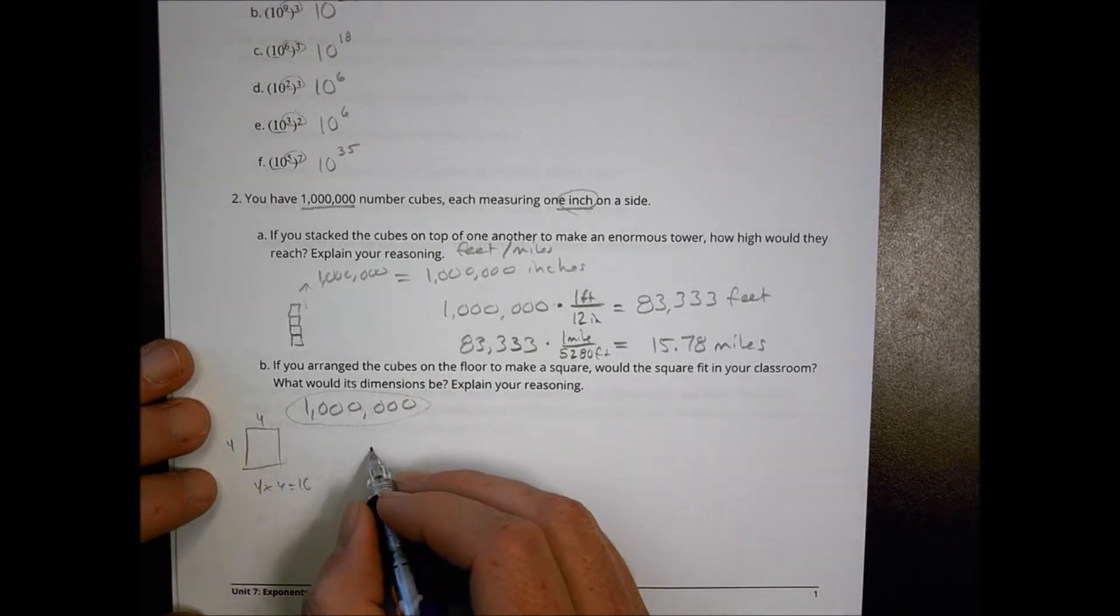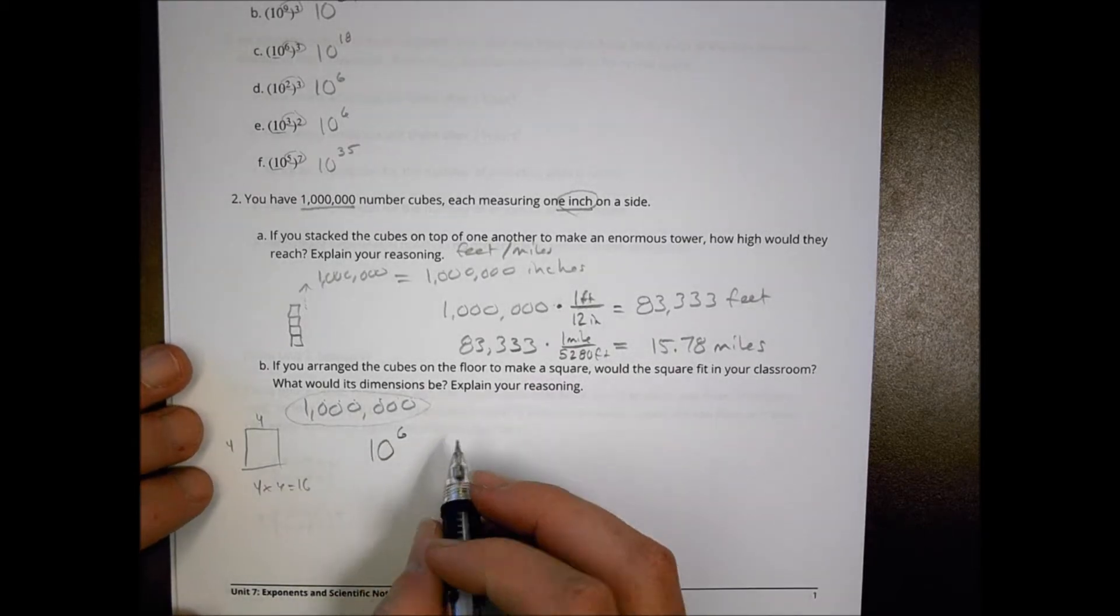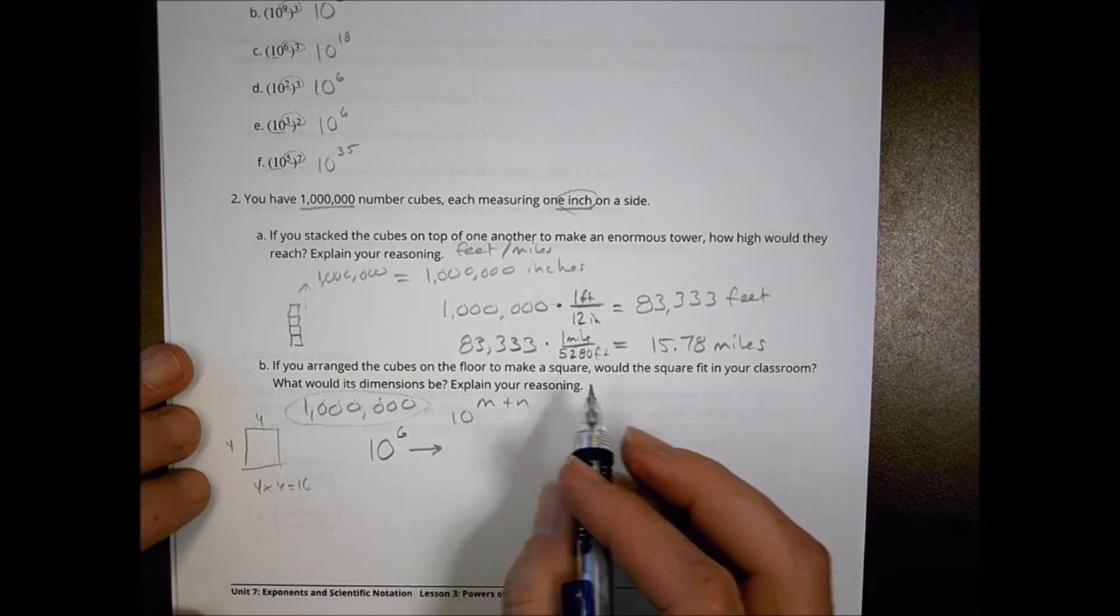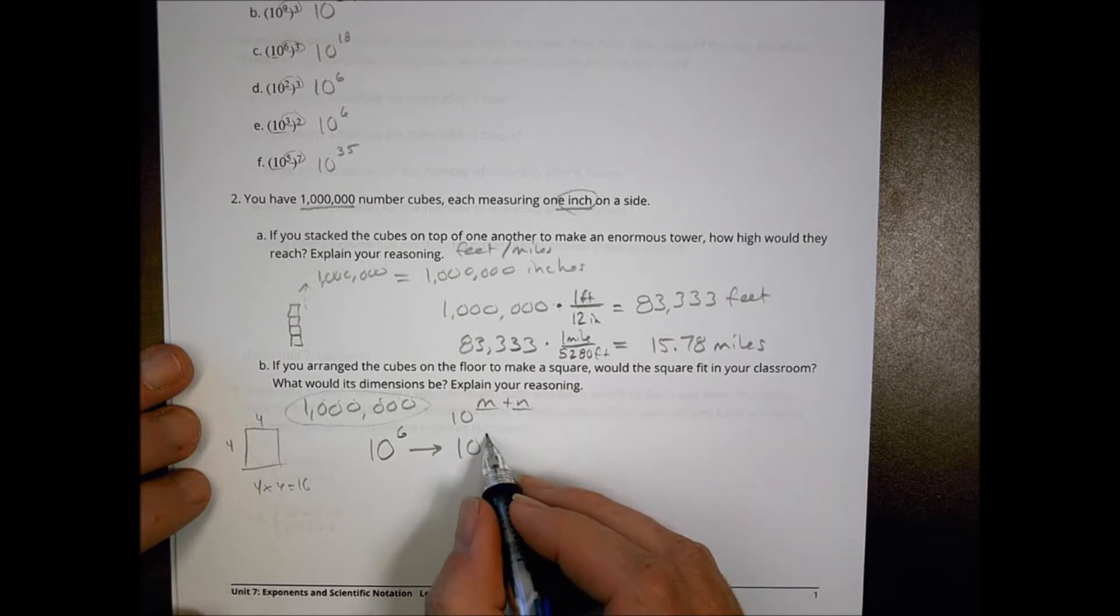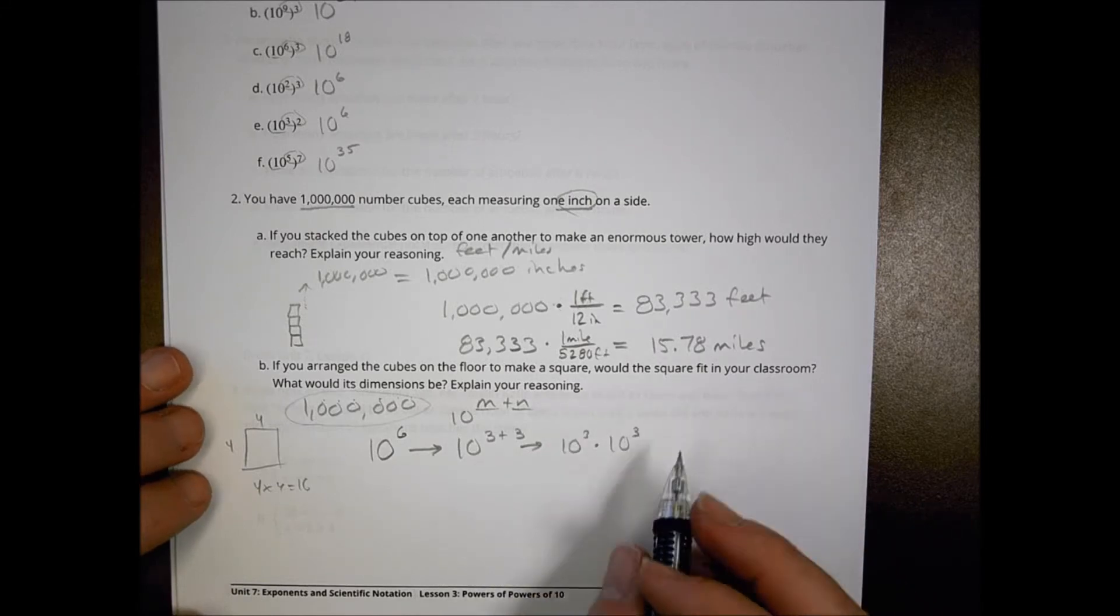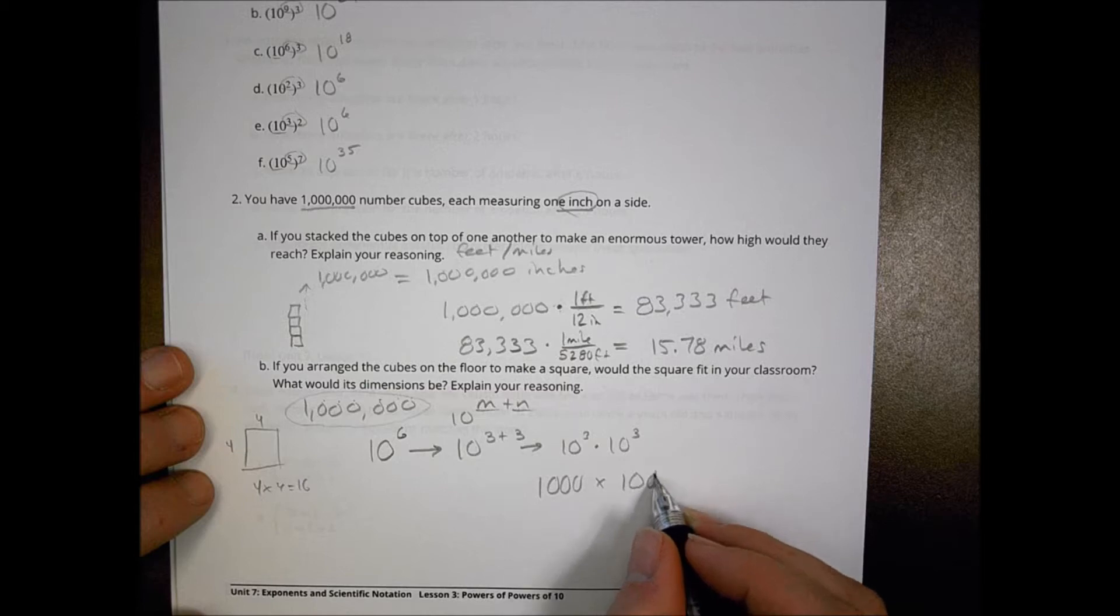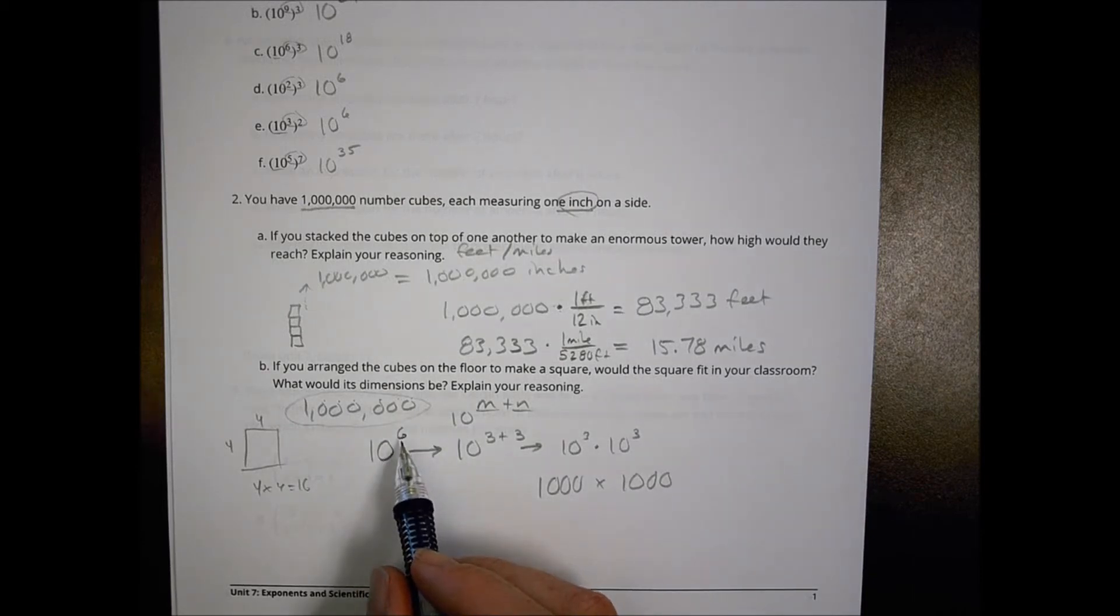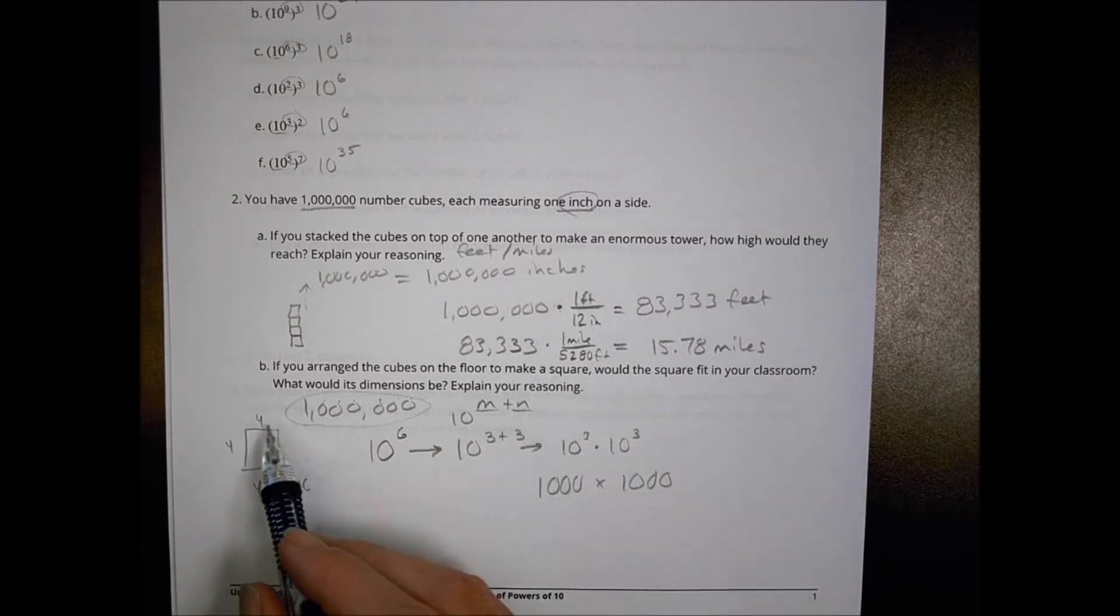First, let's break this down into a base 10. This can actually be written as 10 to the 1, 2, 3, 4, 5, 6 power. Knowing that I can split that apart, I can do m plus n for my exponential powers. What number can I have for m and n to break this apart so that I have the same number? I can do 10 to the 3 plus 3 power, which is the same as 10 to the 3rd times 10 to the 3rd.